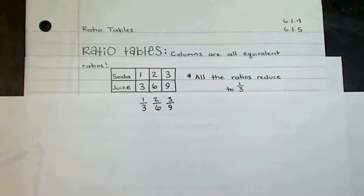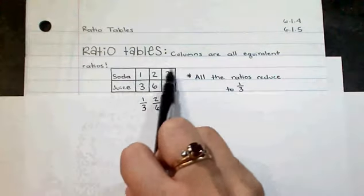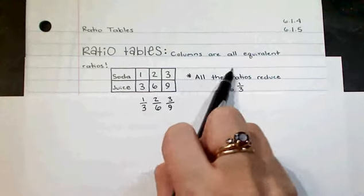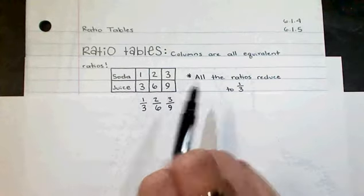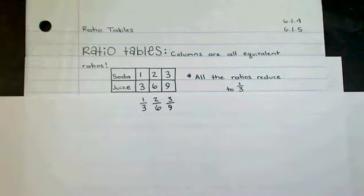Well, what if a question asked me, okay, so there are 50 sodas, how many juices are there? That means I would have to count up by ones, up to 50, so that I could skip count by threes, up to 50. There's a much faster way to solve these problems.